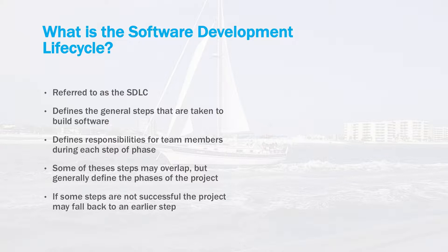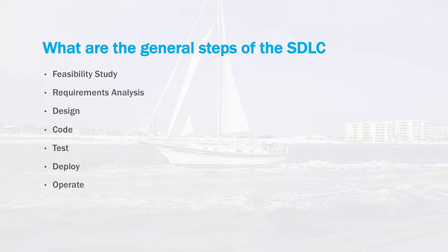Some of these steps may overlap, but they generally define where the project is in respect to developing the final product. If there's difficulty in some steps, the project may fall back to a previous step to fix the problem. For example, if severe problems are found during the test phase, the project may need to go back all the way to the design phase to fix the problem. Although there are many variations of this process, and companies may have their own proprietary model, the following represents the general steps of the SDLC.